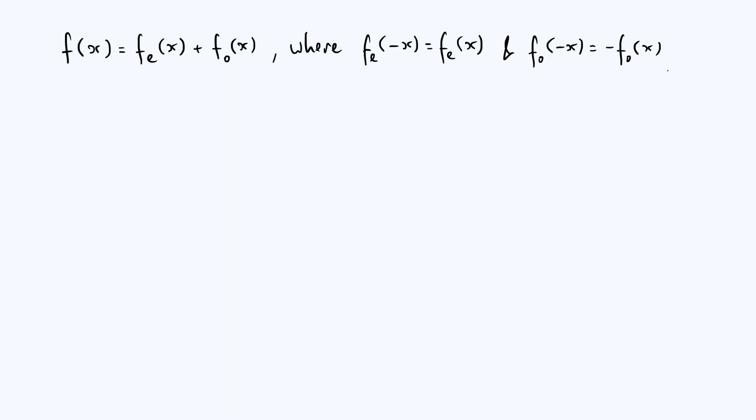If you're integrating over a symmetrical range of x values, the odd part of the function will integrate to zero, which basically follows from the interpretation of an integral as a signed area under a graph.